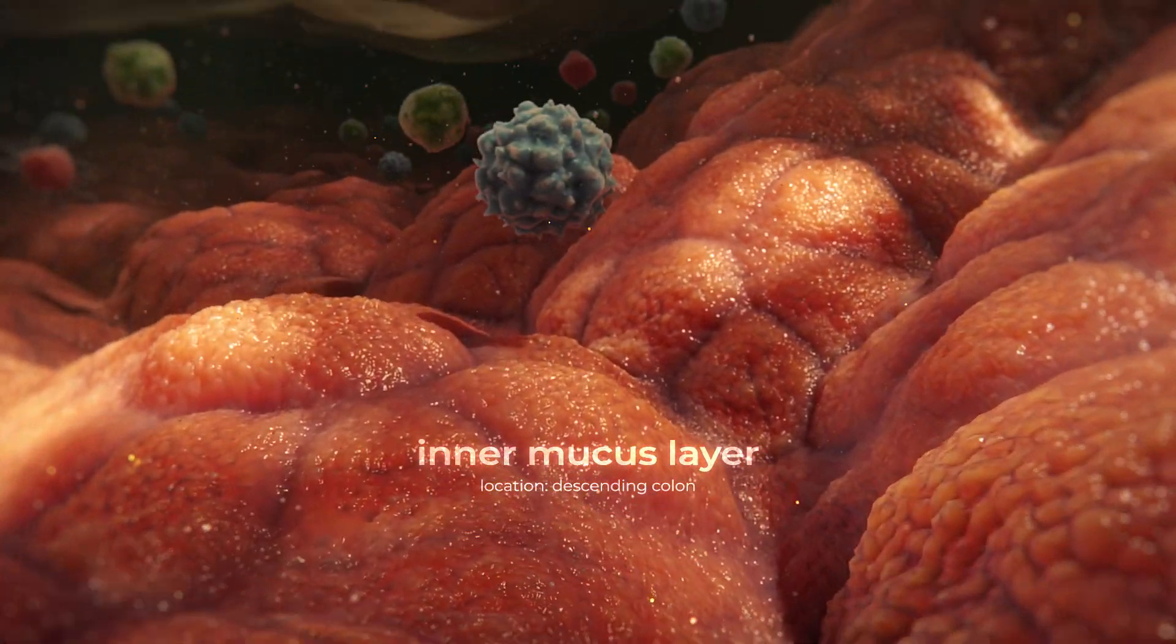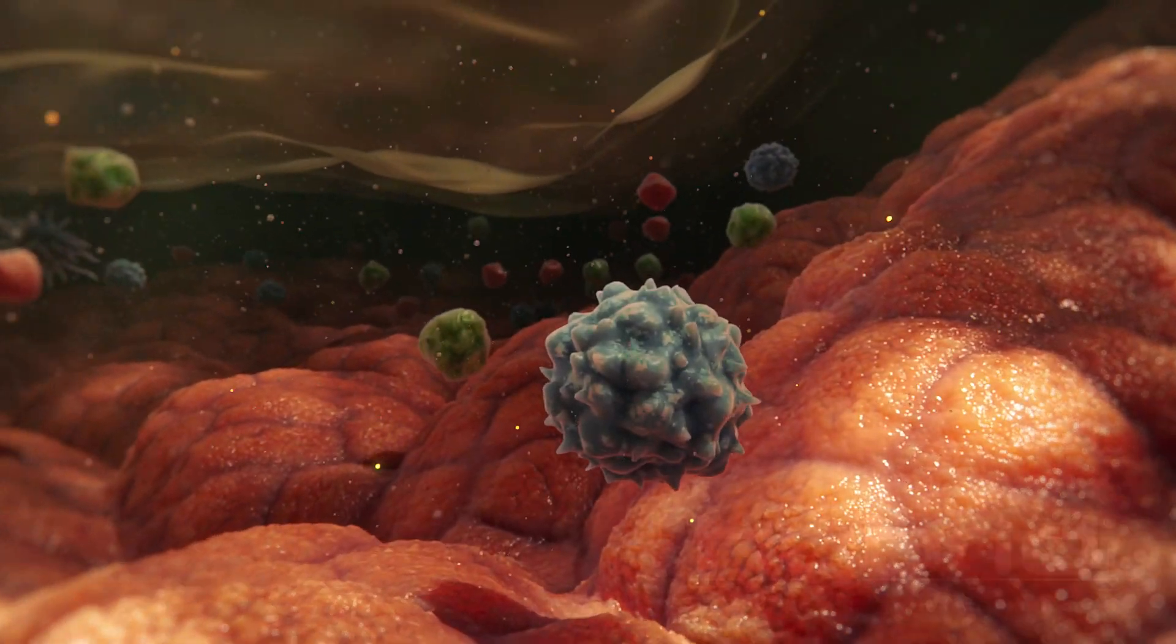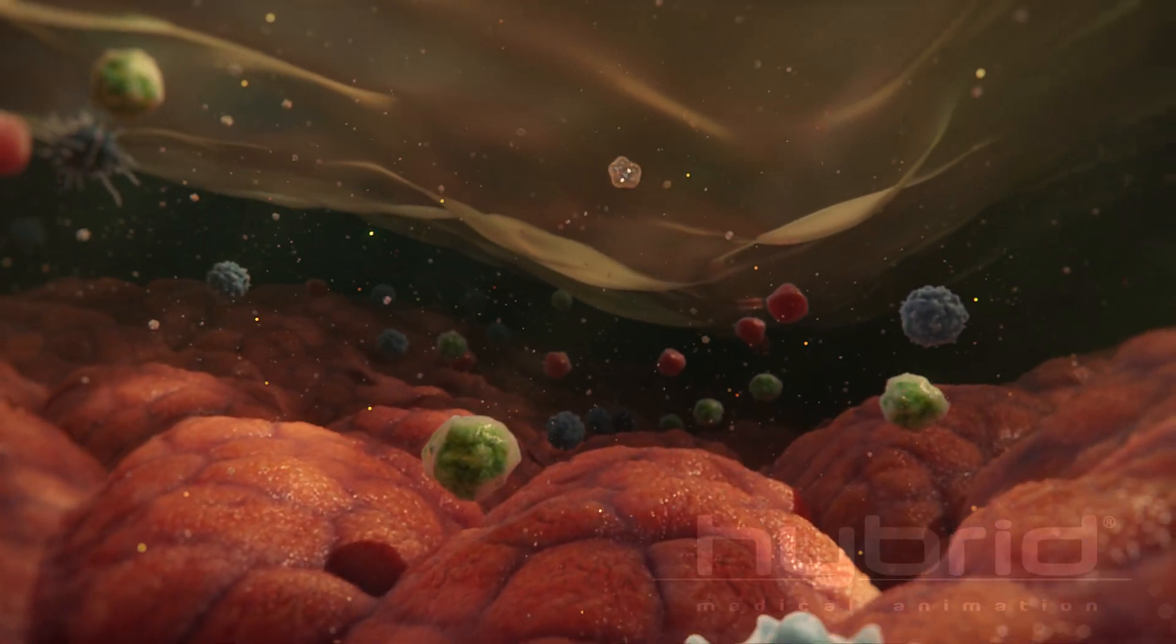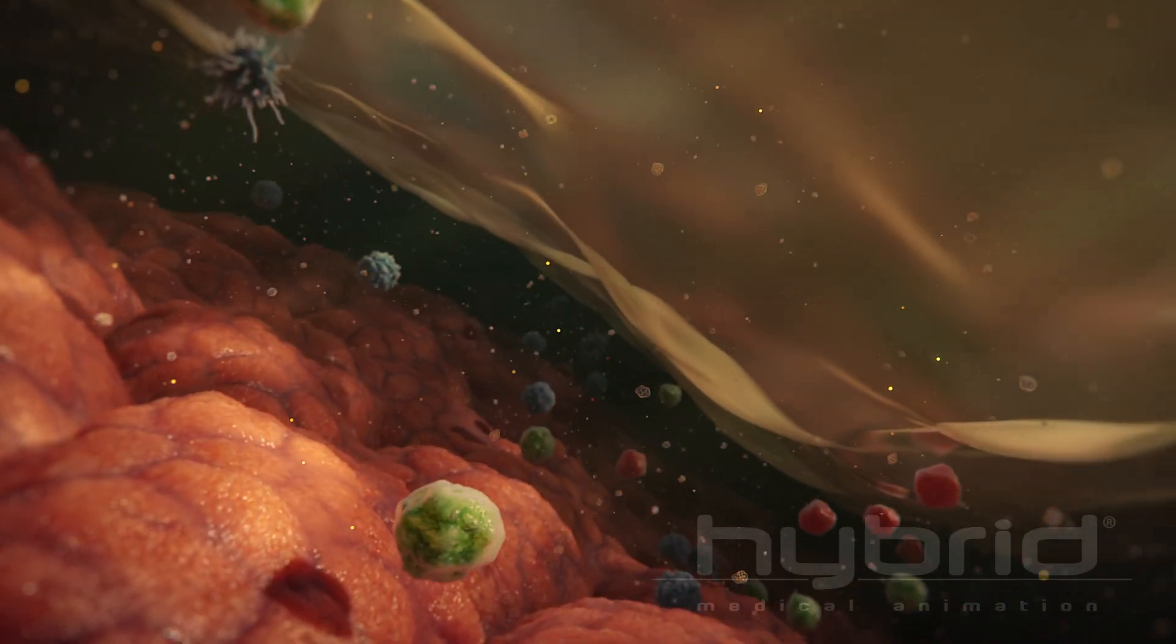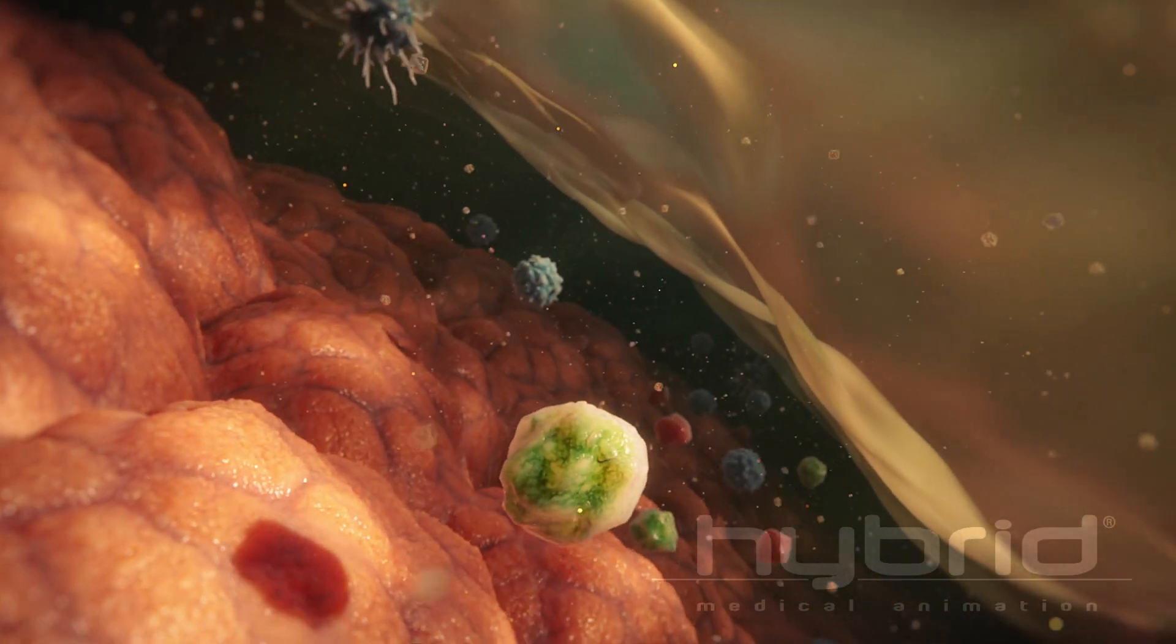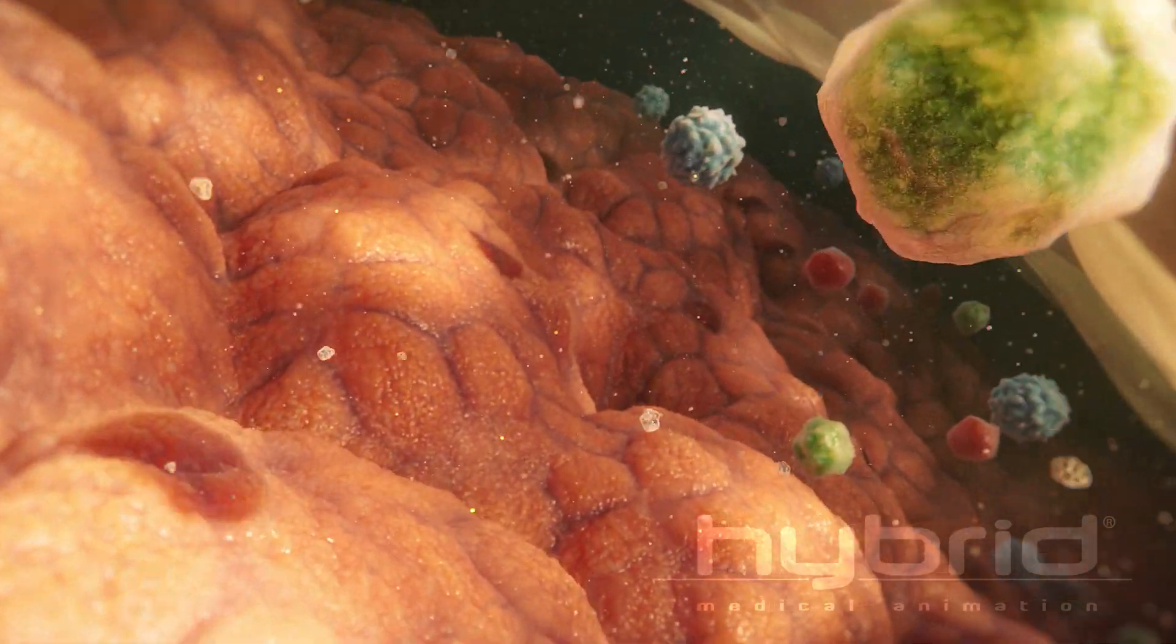Here in the inner mucus layer, various bacterial byproducts such as short-chain fatty acids, hormones and dietary nutrients can be seen descending from above, being absorbed by the colon's epithelial cells.